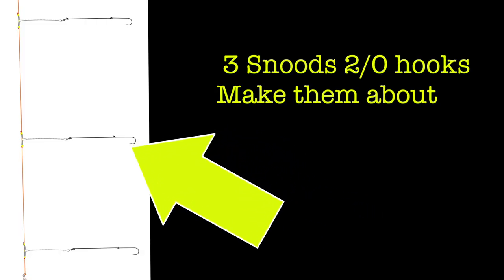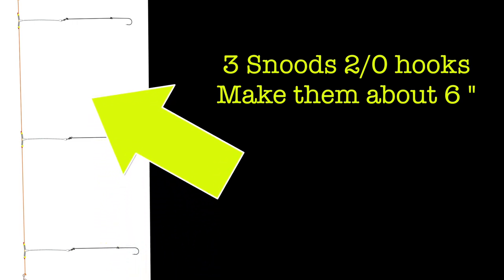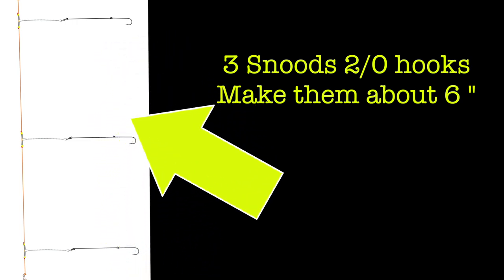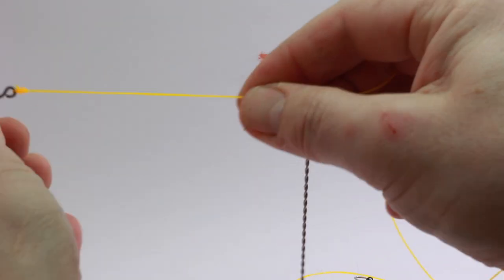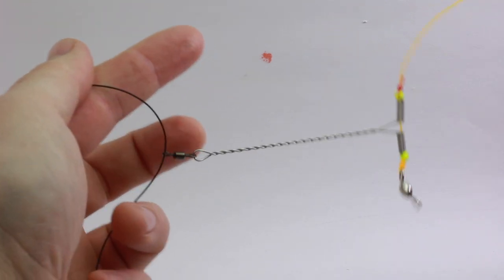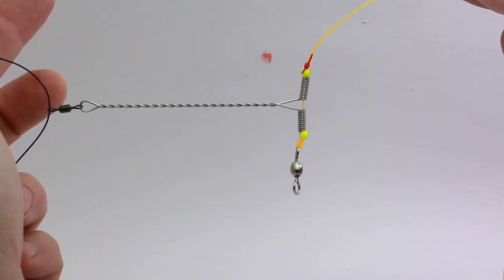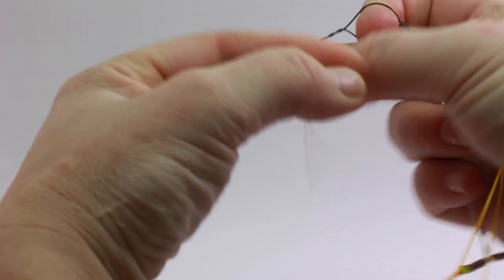Now the last thing that we need to do is just tie on the hook snood itself. Three snoods - we're going to use 2/0 hooks. Depends on the species you're fishing for, obviously. But we want to make those about six inches - they don't need to be too long because the booms are going to take them out - and as long as they don't snag with the one below. So the knot we use is five turns through the loop, and that should work perfectly well for 25 pound or even 30 pound line.